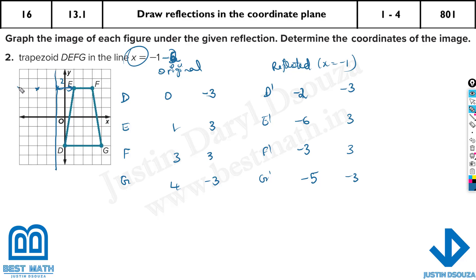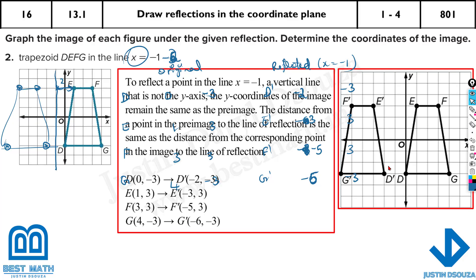Now we can plot the points. D prime is at (minus 2, minus 3), E prime at (minus 3, 3), F prime at (minus 6, 3), and G prime at (minus 5, minus 3). If you join all the lines with a scale you will get the reflected trapezoid along x is equal to minus 1. The answers are: minus 2, minus 3, minus 3, minus 3 for D and E primes, minus 5 and minus 6 for F and G primes.